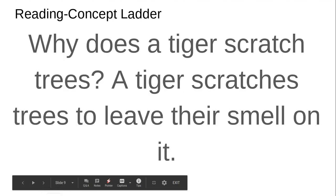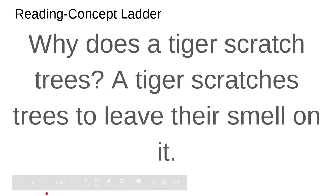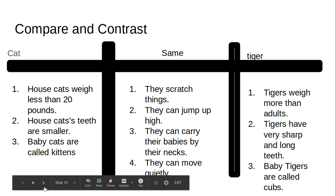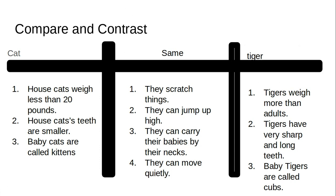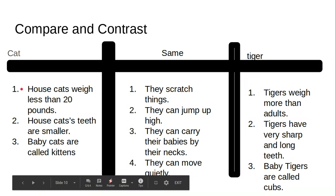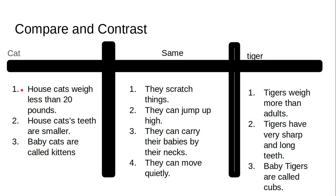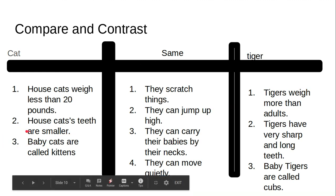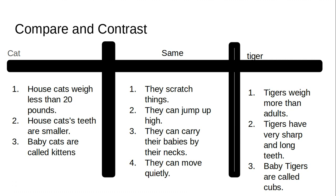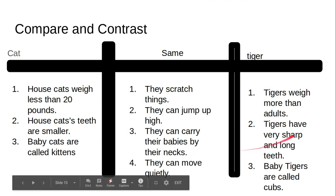Why does a tiger scratch trees? A tiger scratches trees to leave their smell on it. And last but not least, I wanted you to compare and contrast a household cat with a tiger. A household cat — most of them weigh less than 20 pounds. My two cats weigh like eight and ten pounds, so they do not weigh what a tiger weighs. A tiger weighs a lot more than an adult. Number two, house cat's teeth are smaller. They do have sharp teeth, but if they bite you, it's just going to be a little bite. If a tiger bites you, that could be bad — they have very sharp and very long teeth.